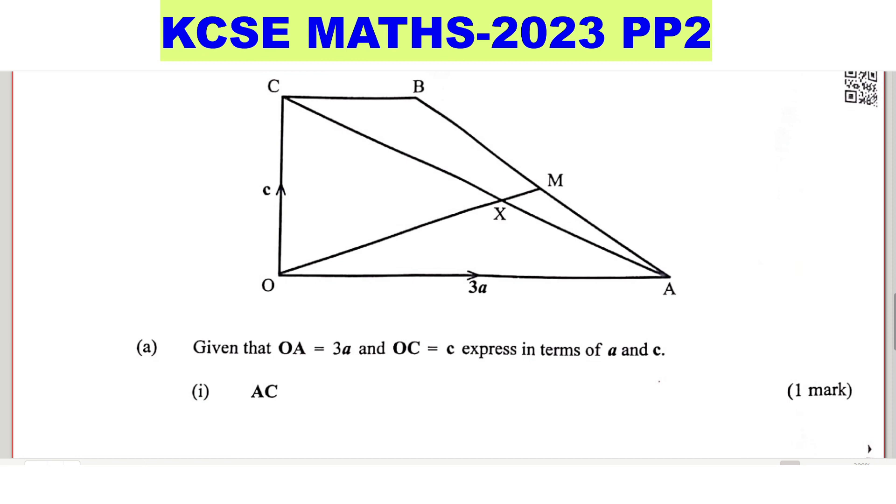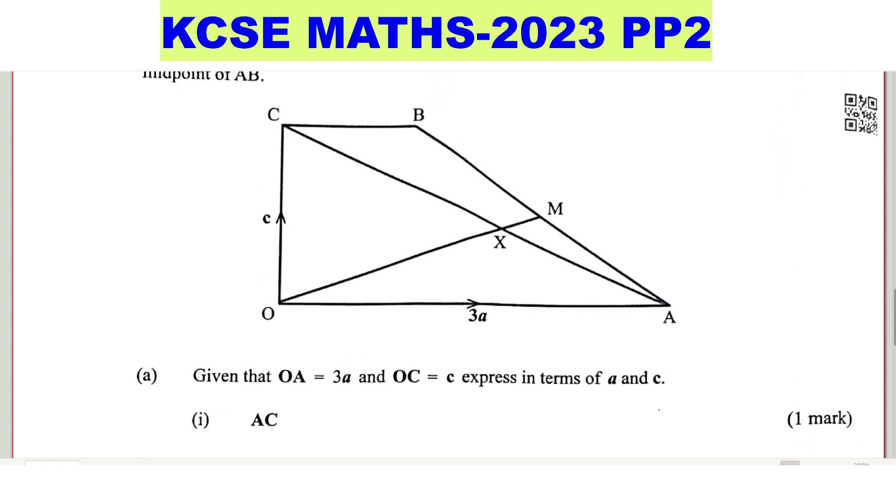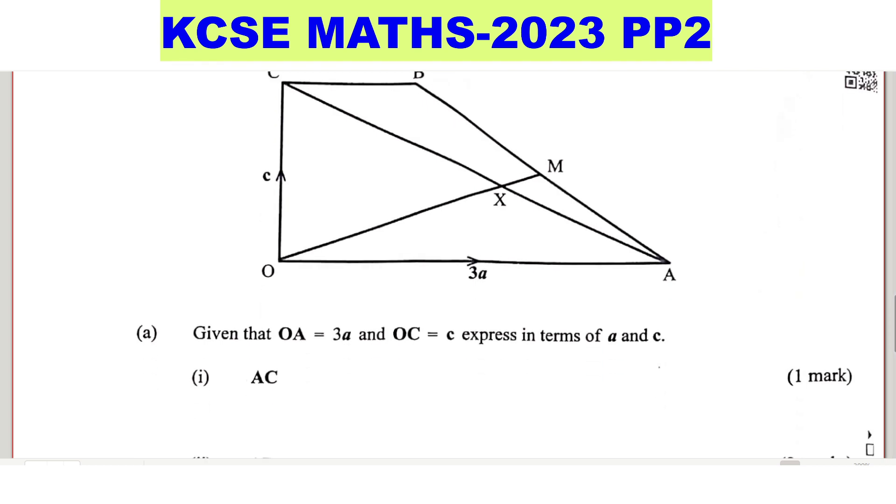Part 1, AC. So study the diagram. Suppose to get AC. So AC will be given by from A to O, then from O to C. That is how you get AC. AO, you're moving in the opposite direction of the arrow from A to O, so that would be negative 3a plus OC, which is c. Or you can write it like c minus 3a. That is the first part.